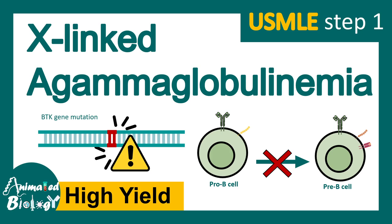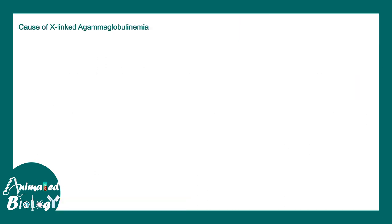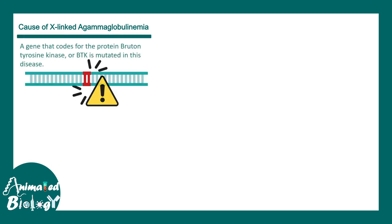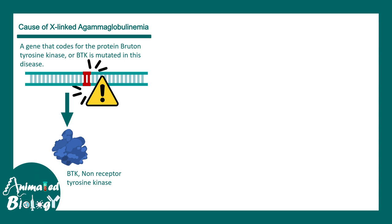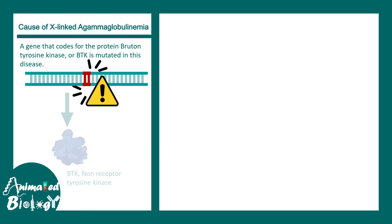In this video we'll talk about X-linked agammaglobulinemia. This is caused by a mutation in the gene that encodes for the kinase BTK. BTK is a non-receptor tyrosine kinase that is really important in the context of B cell development. In this mutation, BTK is not produced, or functional BTK is absent.